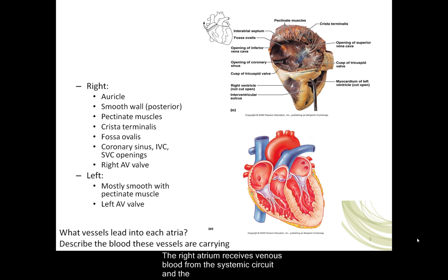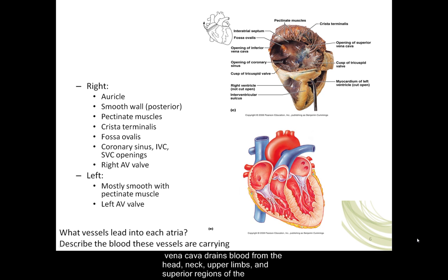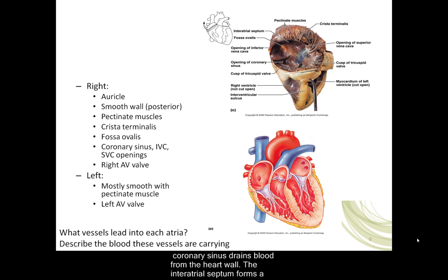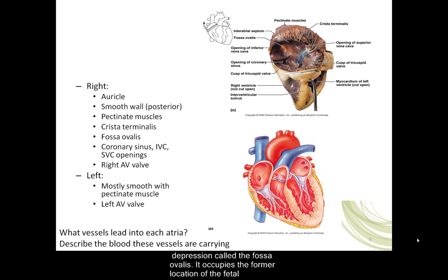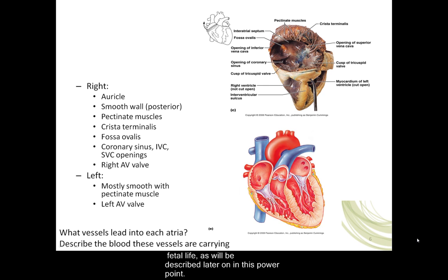The right atrium receives venous blood from the systemic circuit and the heart muscle itself. Three major vessels empty into the right atrium: the superior vena cava drains blood from the head, neck, upper limbs, and superior regions of the trunk; the inferior vena cava drains blood from the lower limbs and trunk; and the coronary sinus drains blood from the heart wall. The interatrial septum forms a thin wall between the right and left atria. The posterior atrial wall is smooth, but the anterior atrial wall exhibits muscular ridges called pectinate muscles. On the interatrial septum there is an oval depression called the fossa ovalis, which occupies the former location of the fetal foramen ovale, which shunted blood from the right atrium to the left atrium during fetal life.